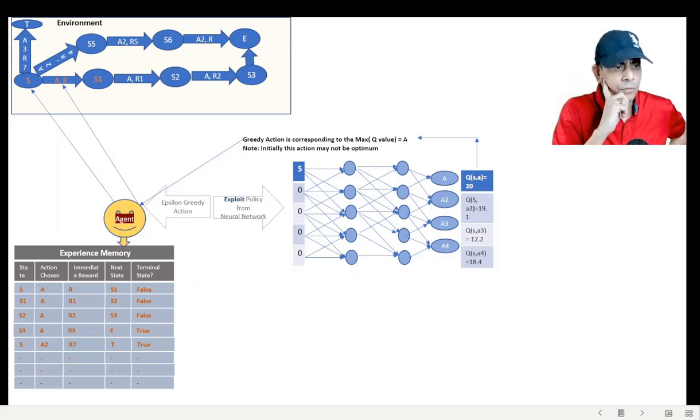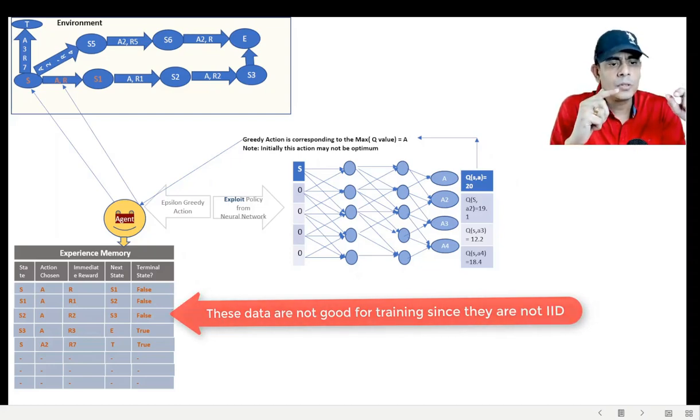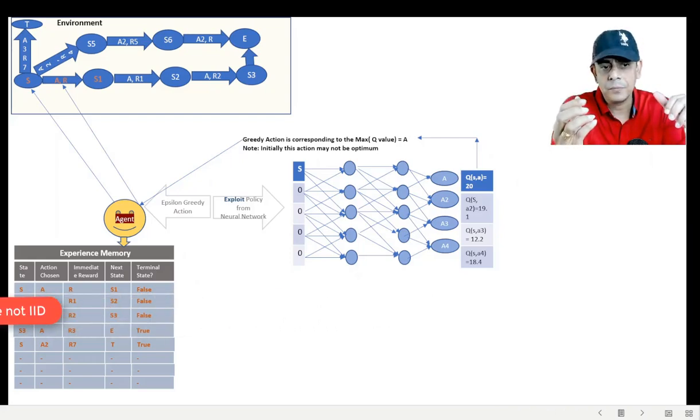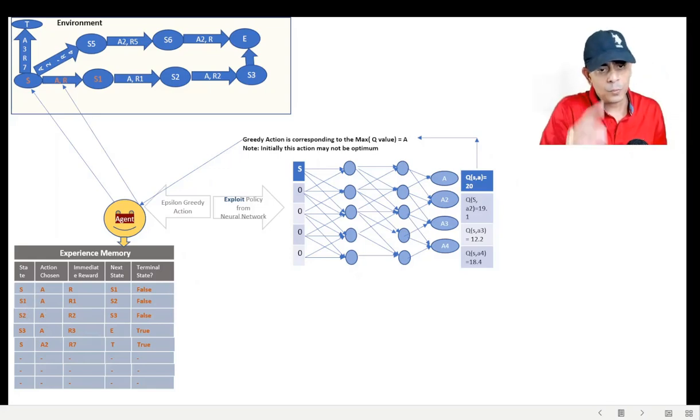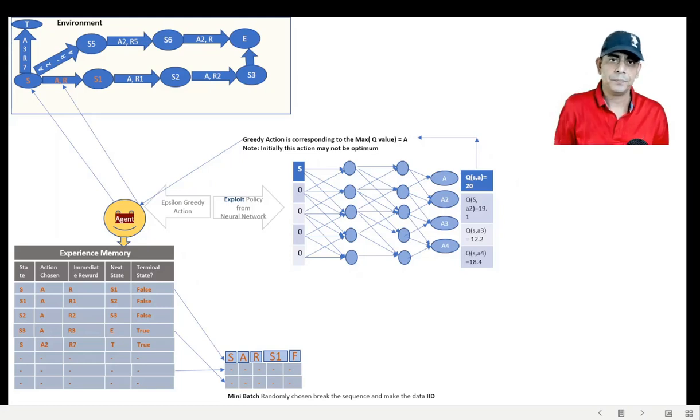Now can we use this as training data? We cannot, for the very simple reason that they are not IID data. They are not independent of each other, neither are they identically distributed. They are not coming from the same distribution - their probability changes as the training happens. They are dependent on the previous one.